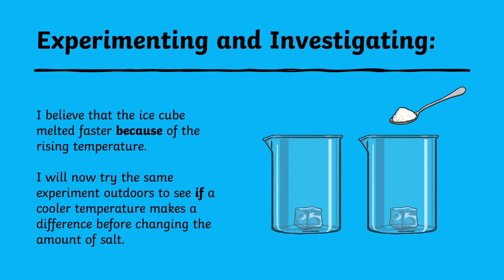Likewise, making predictions, observations, and spotting patterns in science is another key moment where cause and effect will be necessary. For example: I believe the ice cube melted faster because of the rising temperature. I will now try the same experiment outdoors to see if a cooler temperature makes any difference.